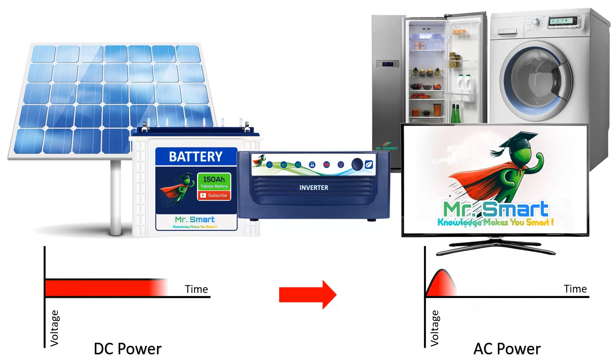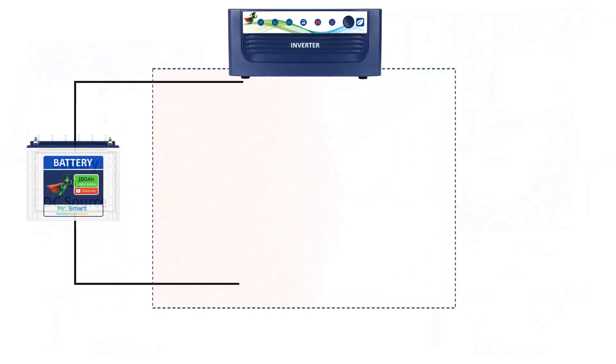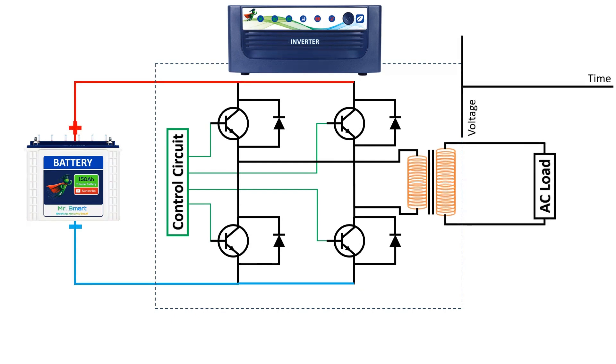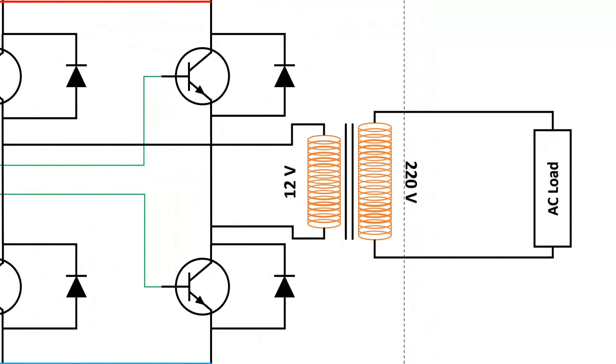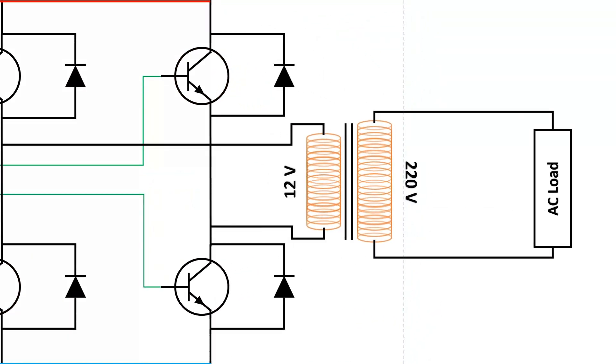Alright, let's dive into how an inverter works. The process is actually pretty straightforward, and here's the simple version. First, the inverter takes DC power from a battery or solar panel. Then, it rapidly switches the direction of the current to mimic the back-and-forth pattern of AC. This switched signal is then boosted to a higher voltage, like 220 volts, through a transformer.